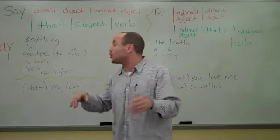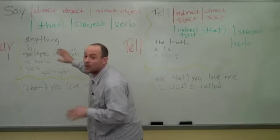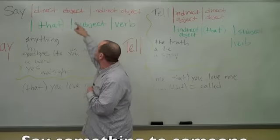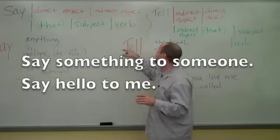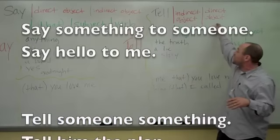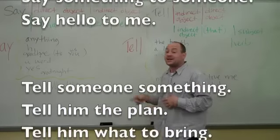Now let's take a look at word order in a phrase. Say and tell work in different ways. Say something to someone - say hello to me. Say plus direct object and indirect. But tell someone something - the person and the thing. Tell them the plan, tell them what to bring.